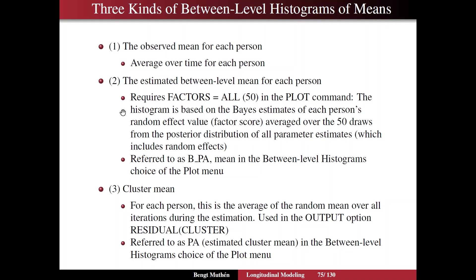So the histogram in this case is based on the Bayes estimates of each person's random effect value, average over 50 draws, as specified up here, from the posterior distribution of all parameter estimates. So that's the distribution that you have at the end when the analysis has converged. The posterior distribution of all parameter estimates and in Bayes the unknowns include not only the parameters but also the random effects that you want to estimate. This mean is referred to as B underscore PA for the PA variable. And there's also the median, of course.